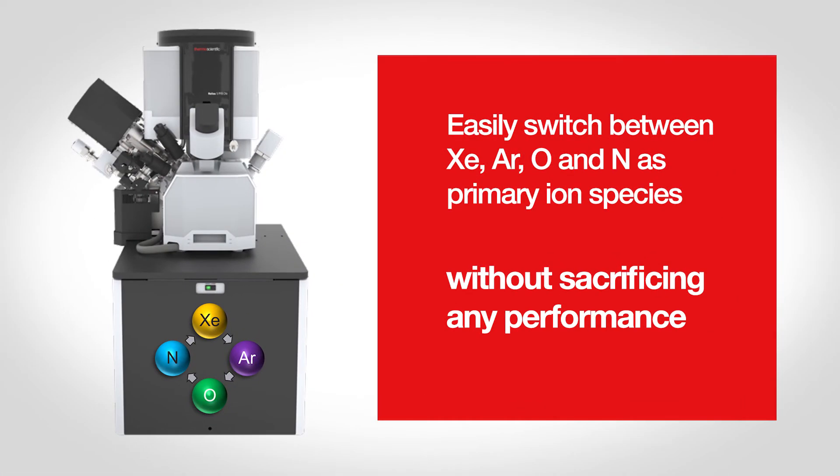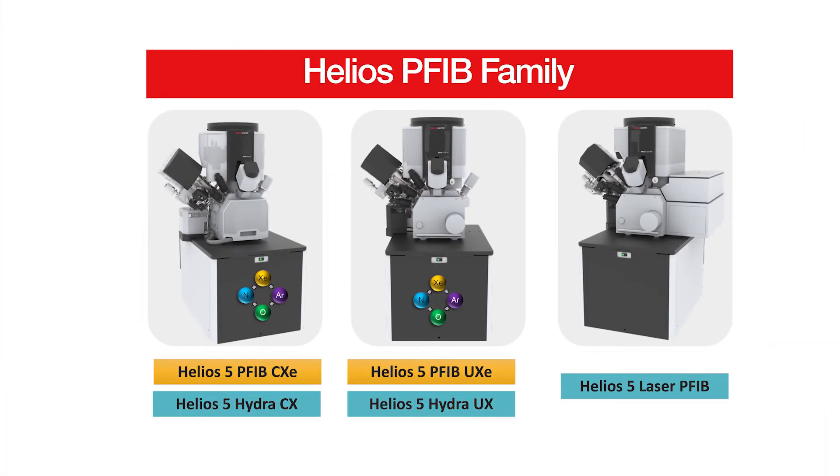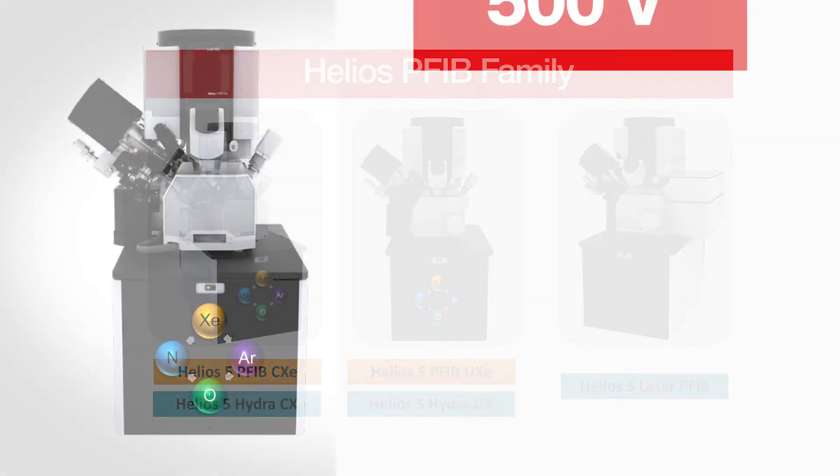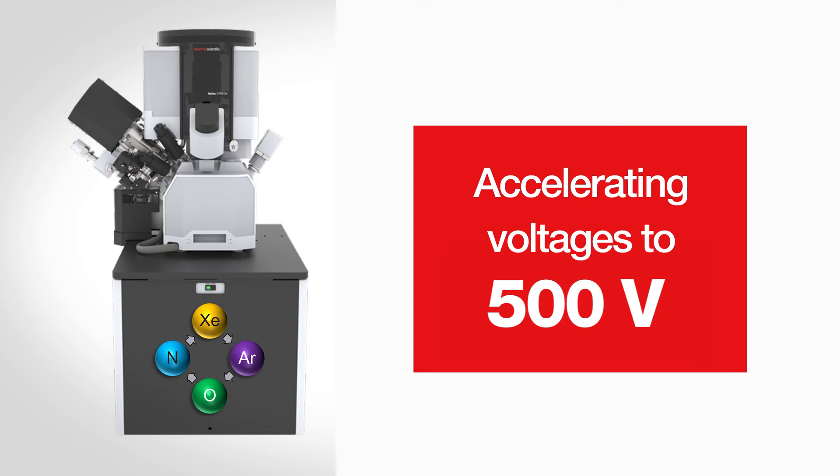Initially, the Helios Hydra brought the ability to switch gas species to change the ions to tailor your ion species to your sample. And with the Helios 5 launch at the end of 2020, the user then had the ability to use accelerating voltages down to 500 volts for any of those ion species.